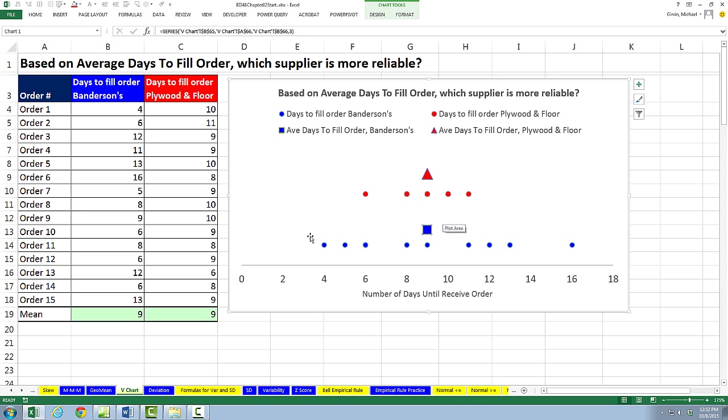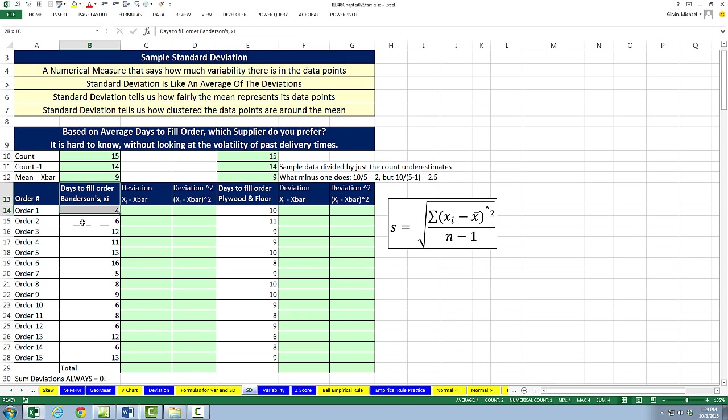The calculation we're going to use is called standard deviation. And the essence of the standard deviation is going to look at the deviation between the mean and each one of its data points. So you could imagine if I took four, the particular value in this case, minus nine, I would get minus five. That means a deviation for this particular value from the mean of minus five. Up here, this would be 16 minus nine, so it would be a deviation of plus seven. So if we could take all of those deviations and use them in a calculation to measure variation or dispersion, that's what we want to do. And our calculation is standard deviation. We're going to go over to the sheet SD and calculate standard deviation for Banderson's days for shipment and plywood and floor.